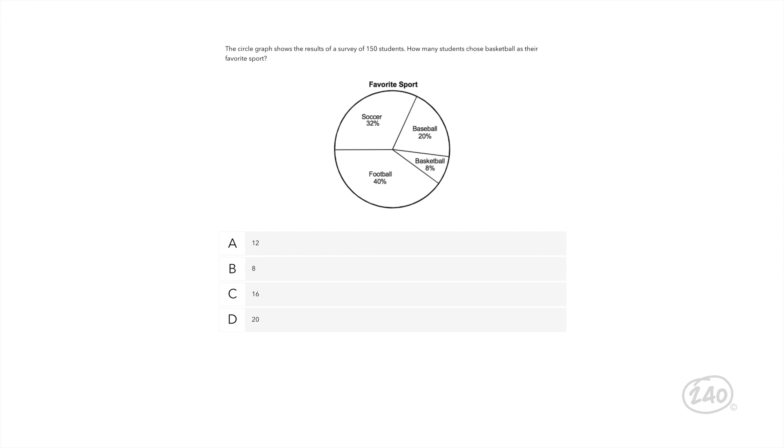Since 150 students were asked, the percentage doesn't equal the number of students. Instead, we need to multiply the percentage by the total. So, 8% times 150. Now, we can do this pretty easily with the calculator we're provided during the test. 8% gets entered into the calculator as .08. Times 150 gives us a total of 12 students.